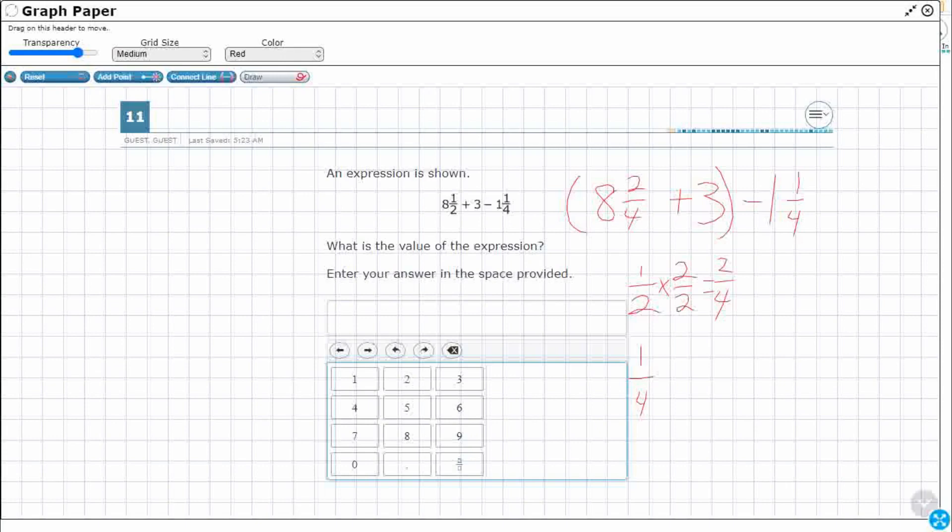Because if I've got eight and two fourths, so if I've got like eight holes, one, two, three, four, five, six, seven, eight, and then two fourths would be something like that.